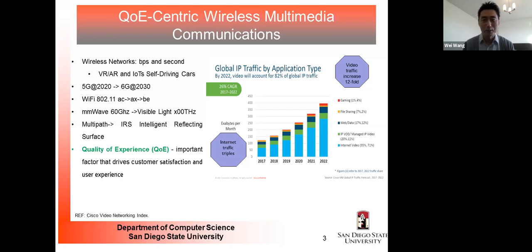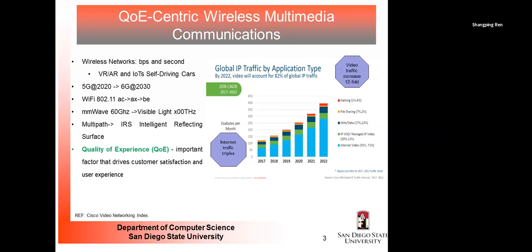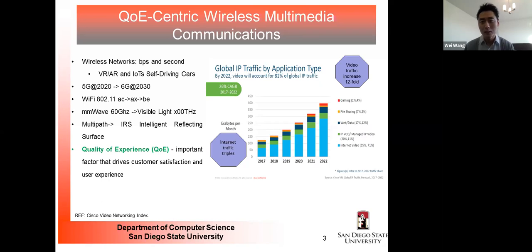On another front, people are studying how to control the wireless environment using Intelligent Reflecting Surfaces (IRS) — reprogrammable small antennas embedded in wallpapers, floors, and city structures. By controlling the reflecting intensity and phases of waves, we can manipulate the environment — for example, removing unwanted echoes or strengthening desired signals. These represent the key challenges the wireless network community is actively working on.